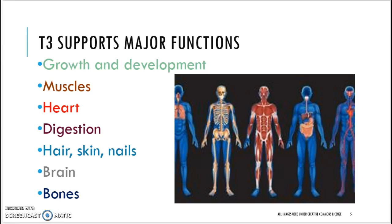Every single cell in your body relies on thyroid hormone, specifically T3, to do its job. Thyroid hormone determines how quickly your body uses oxygen and calories from food to produce the energy cells need to do their jobs. It is critical in regulating the speed at which individual cells function, also known as basal metabolic rate, or BMR.